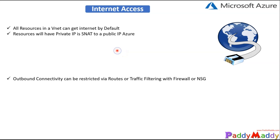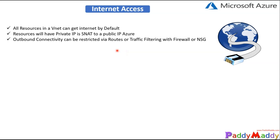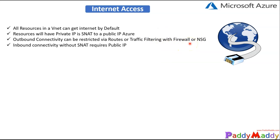And if you want to restrict it, as we talked earlier, for the outbound connectivity to be restricted, you can do it with user routes, traffic filtering, firewalls, or NSGs — all of that can be done.